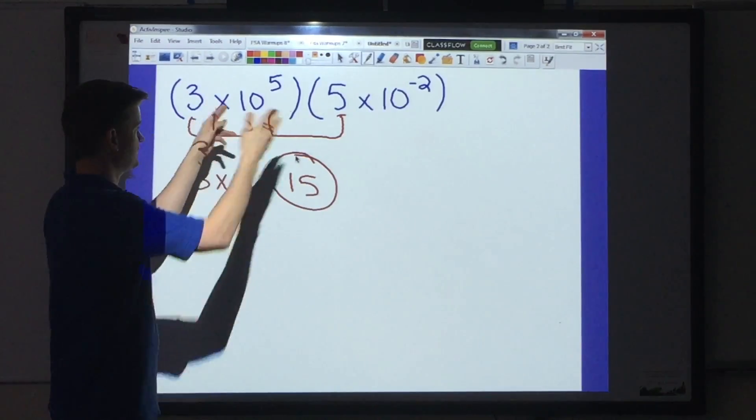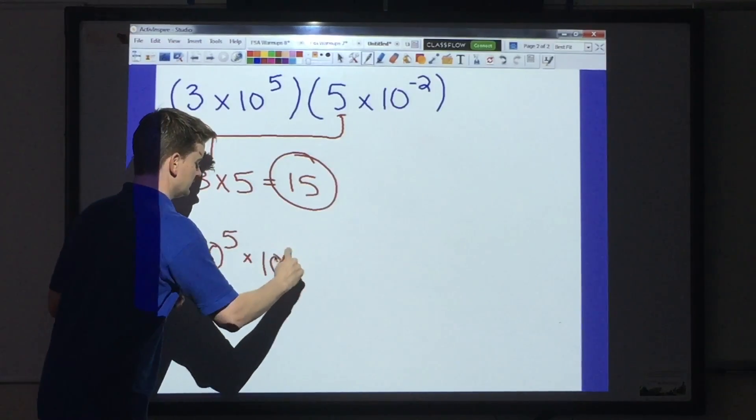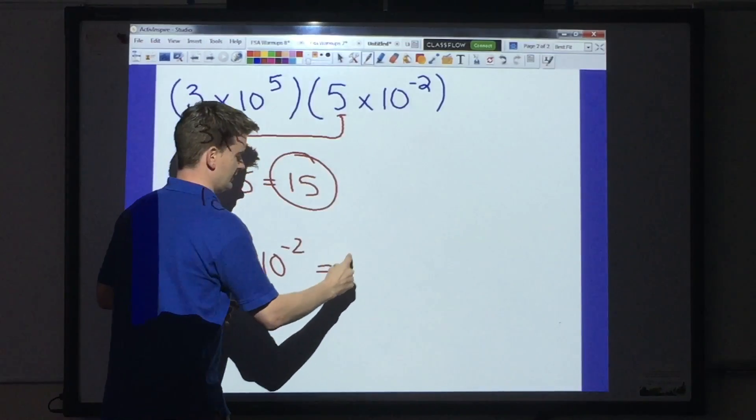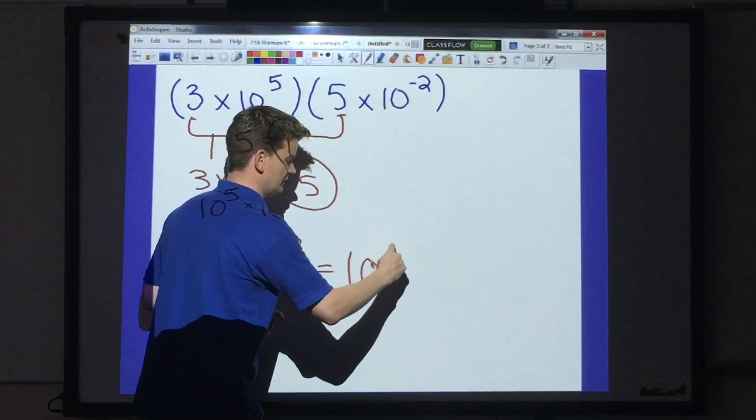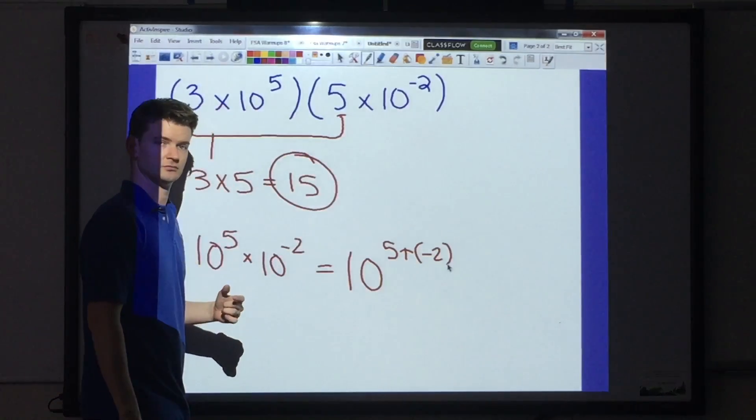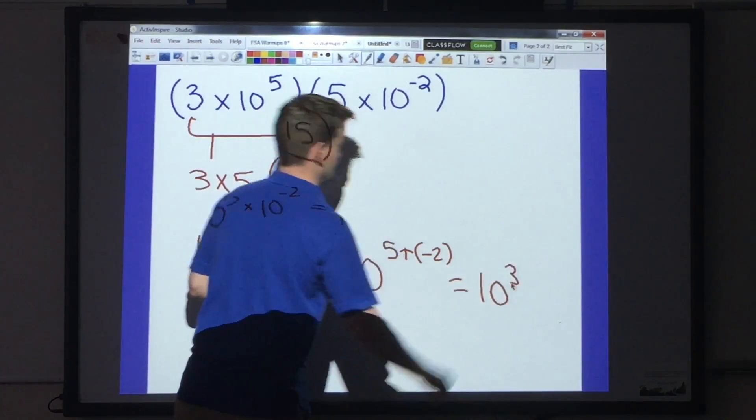The next step, we take our bases, and because they are like bases, we're going to add our exponents together. That's going to give me 10, 5 plus negative 2, which becomes 10 to the 3rd.